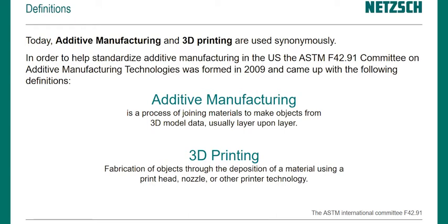For 3D printing, it's defined as the fabrication of objects through the deposition of a material using a printhead, nozzle, or other printer technology. So 3D printing is now a subgroup of the additive manufacturing technologies, and it specifically entails material extrusion, binder jetting, and material jetting. The big difference is that 3D printing is a subgroup of additive manufacturing, combining three technologies.